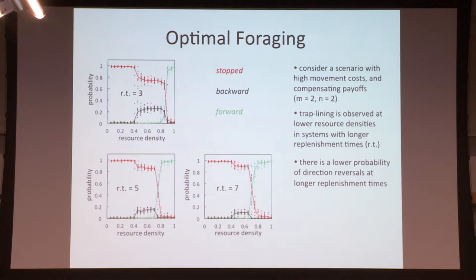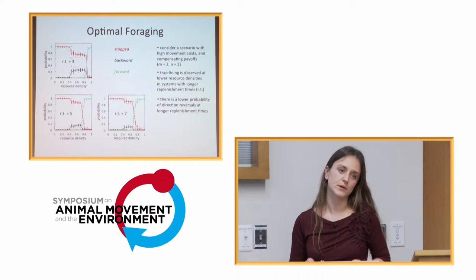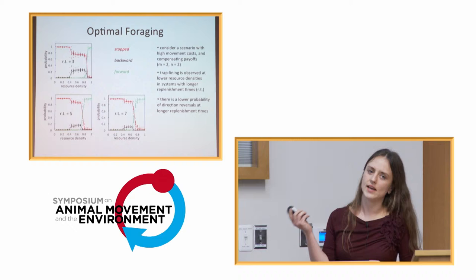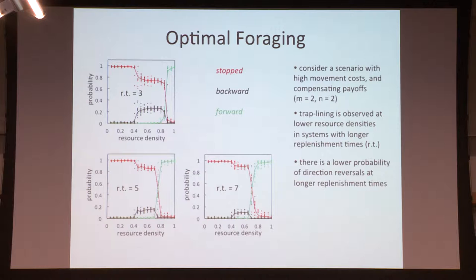At low resource densities, if you're on a flower and there's not a lot of flowers around, you're going to spend a lot of energy moving forward, so you want to sit and conserve your energy and wait for that nectar to come back, because if you move forward you're probably not going to find a flower. Now the unusual thing is that we actually get some probability of turning backwards. This is for a simulation where my movement cost was twice as much as staying put and I was getting roughly the same amount out of my flower.